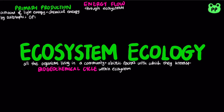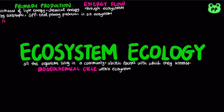The gross primary production, abbreviated as GPP, is the total primary production of an ecosystem. The net primary production, abbreviated as NPP, is gross primary production minus the energy used by primary producers for respiration.